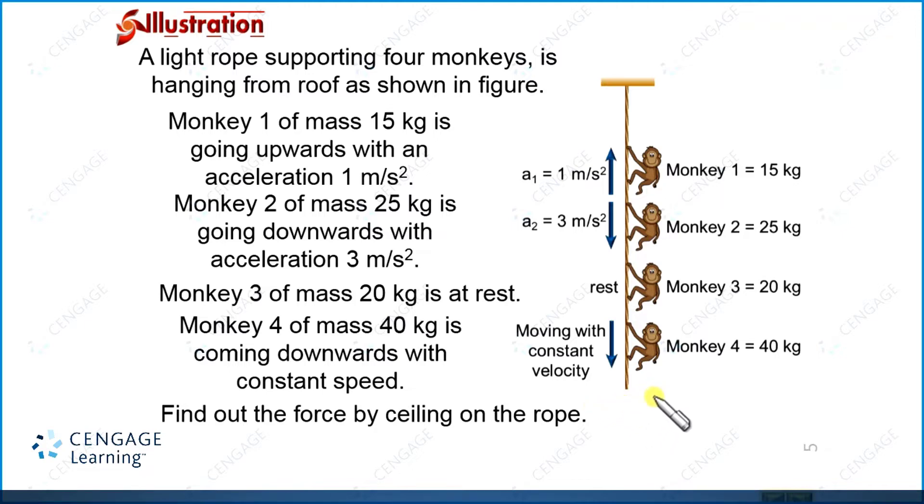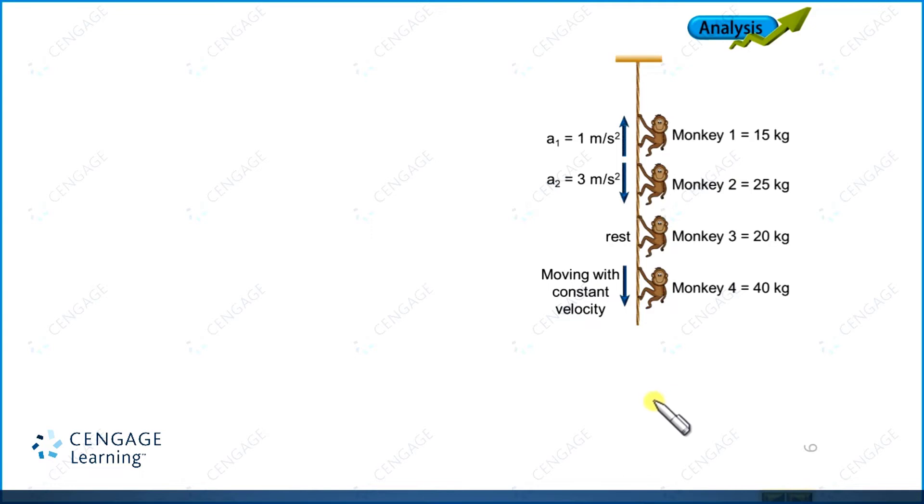Let us make the diagram to the next phase. Let us select these four monkeys as a system. And if we select these four monkeys as a system, this is our system. In this system, we can observe we have one gravitational force, capital Mg—the total mass of the monkeys multiplied by g. And one more external force acting on the system, that is the tension force in the upward direction. These are the external forces acting on the system.